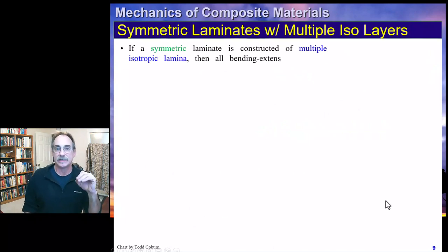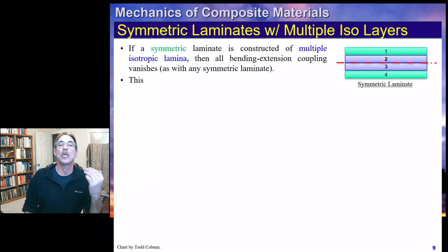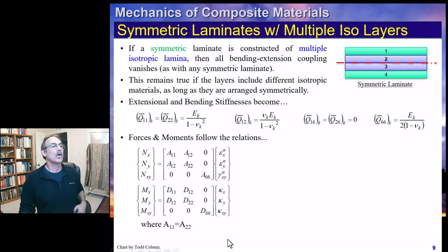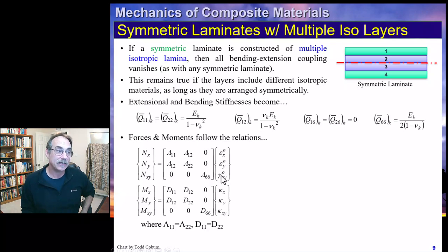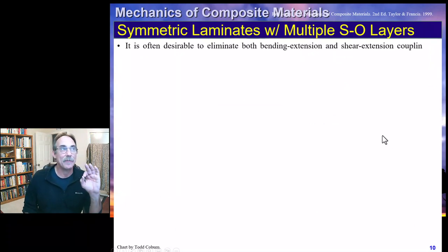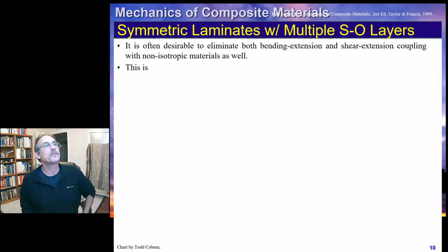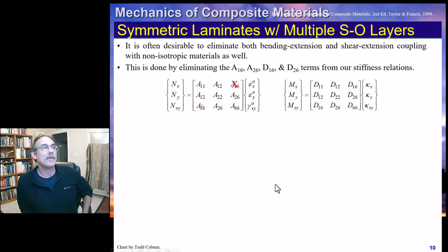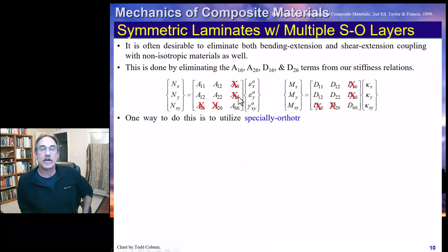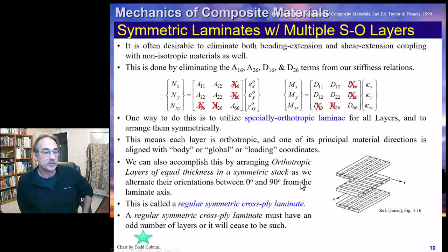If we have a symmetric laminate constructed with multiple isotropic layers, we get even more benefit. The B matrix is zero, and this also eliminates extension-shear coupling and bending-twist coupling. If we have a symmetric laminate where each layer is specially orthotropic — orthotropic and aligned — we get similar benefits, again eliminating the shear extension terms and bending-twist terms.